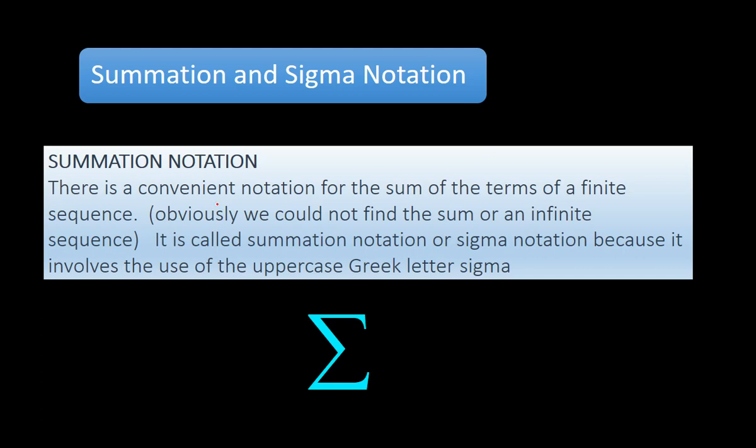Summation notation is a convenient notation for the sum of the terms of a finite sequence. A finite sequence stops - it could be 10 terms, it could be 100 terms, it could be a million terms, but it just stops. Obviously we can't find the sum of an infinite sequence because an infinite sequence of numbers would go on forever. So it's called summation notation or sigma notation because it involves this Greek letter sigma.